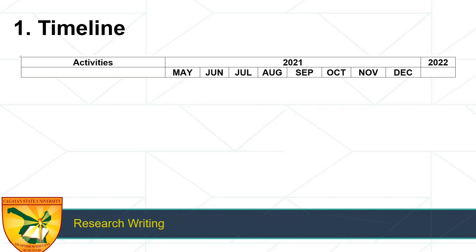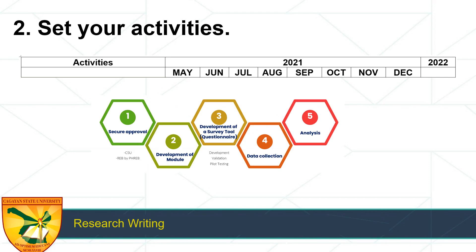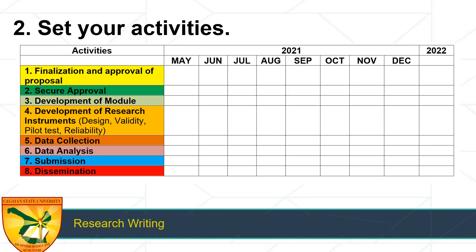You simply start with this format — you have the activities that you will be doing and your timeline. The timeline can be as specific as weeks or days, but usually I put it in months for a Gantt chart. Then second, set your activities. You will see your major activities in your data gathering procedure or the flowchart you've already done. I have here five major activities, and you just plot them out in the activities section.